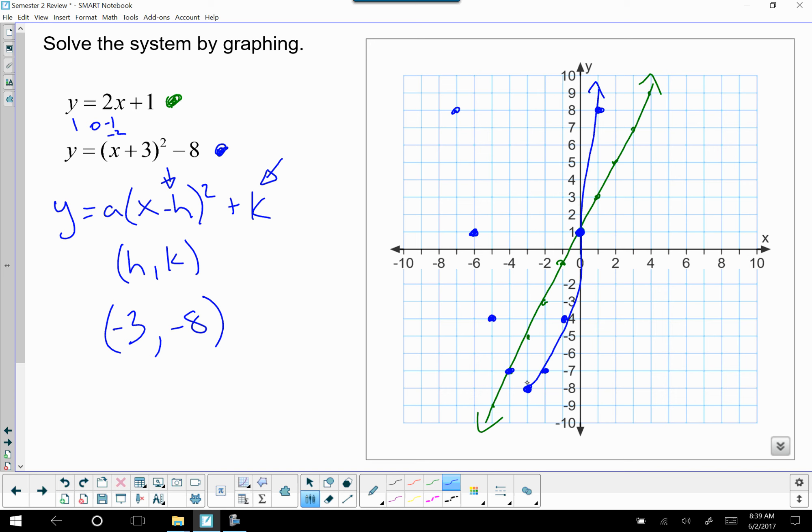And so when we graph these, when we plot our points, we can see that we have solutions at this point and at this point, because solutions are where your graphs or where your equations run into each other, where they meet each other. So our solution is negative 4, negative 7, and we've got another solution at 0, 1.